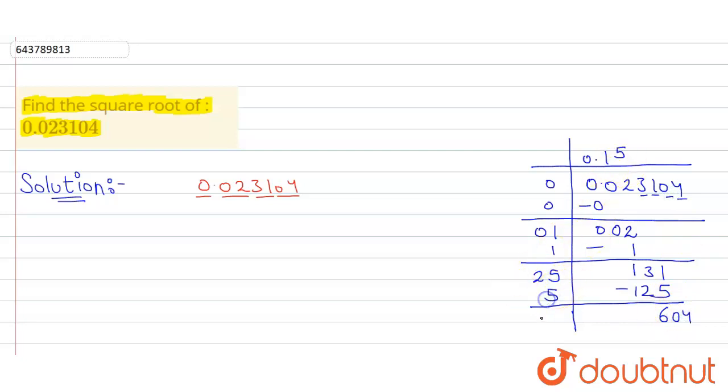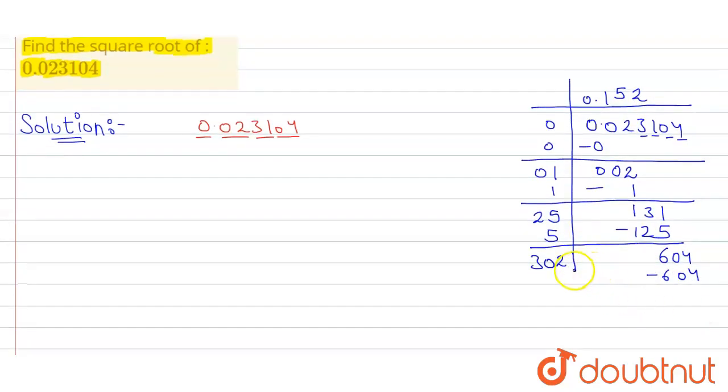25 plus 5 is 30. Now 301 into 1 is 301, and 302 into 2 is 604. So answer will be 0